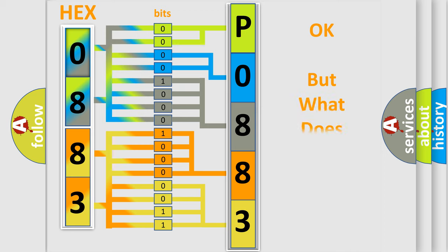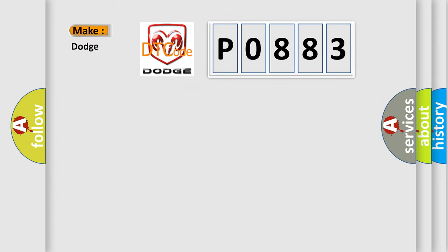The number itself does not make sense to us if we cannot assign information about what it actually expresses. So what does the diagnostic trouble code P0883 interpret specifically for Dodge car manufacturers?